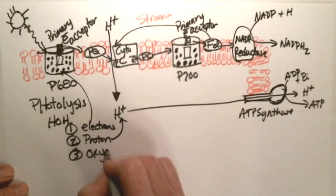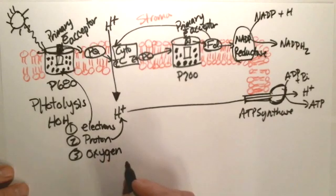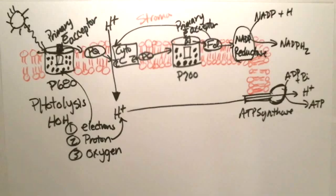And then the last thing is oxygen. Oxygen is going to be given off, and this oxygen is what's released. It's one of the things that we breathe in, what we need to survive, and the plant is actually using it as a waste product.